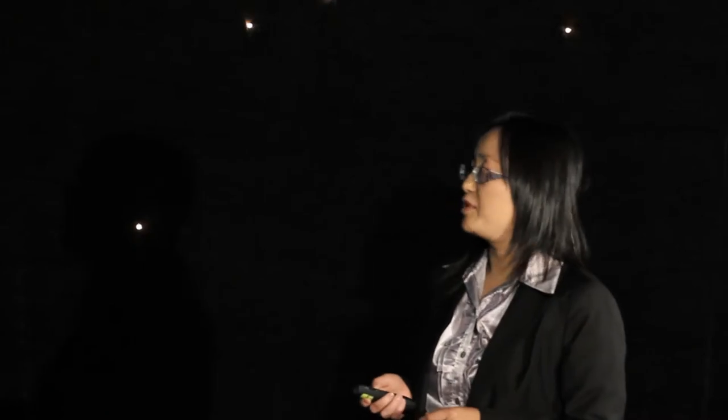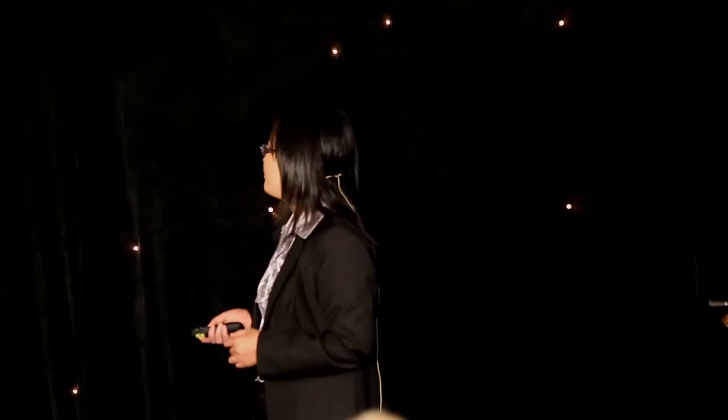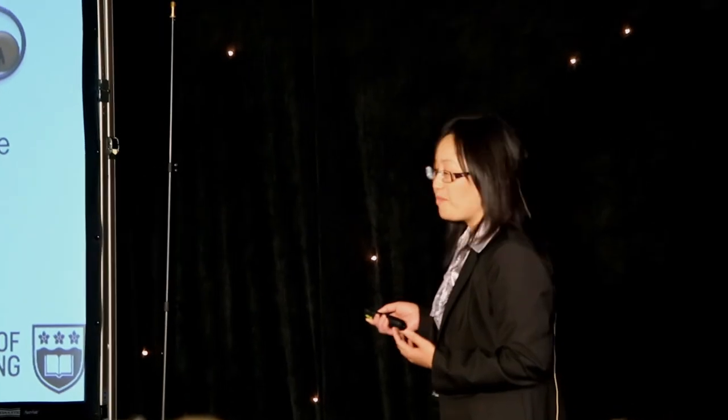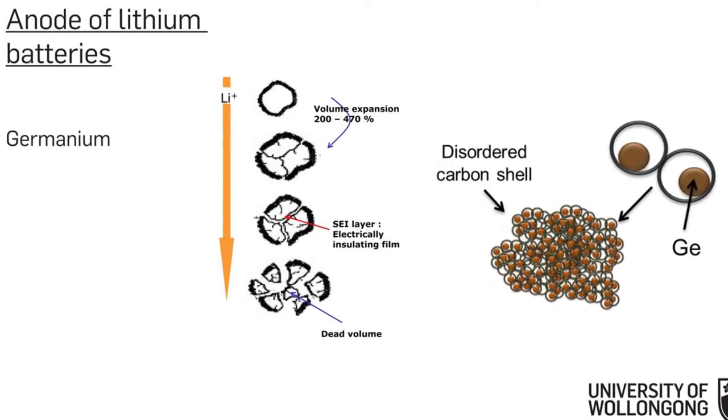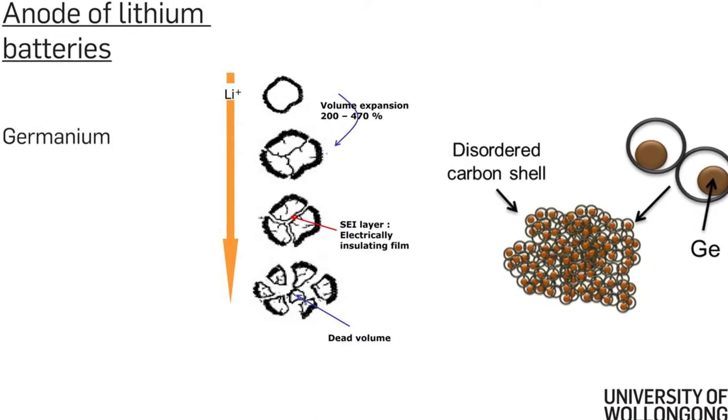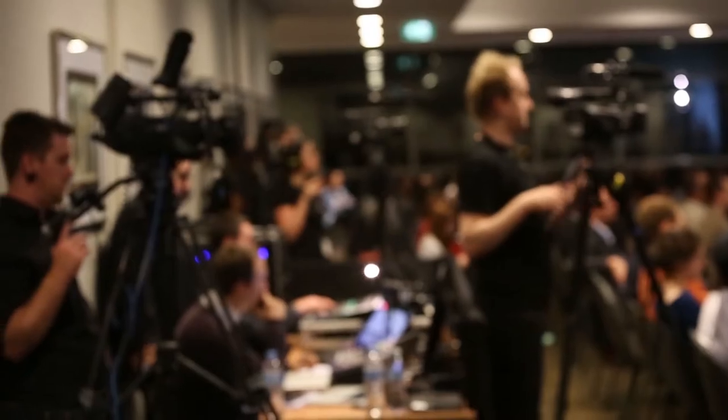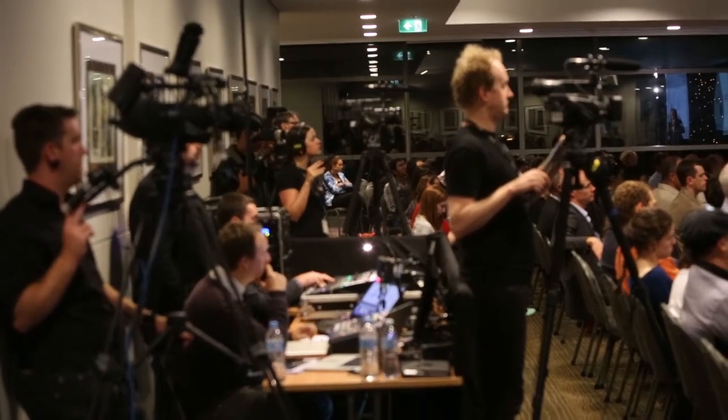Recently, we found germanium is a more promising anode material than silicon in terms of fast charging capability because lithium diffusivity in germanium is 400 times higher than in silicon. But germanium is similar to silicon. It suffers from big volume change when lithium moving in and out of the structure. So it causes crack and capacity fading. To solve this problem, we designed and fabricated germanium carbon core-shell hollow structure. The particle size of this sort of core-shell structure is around 30 nanometers.